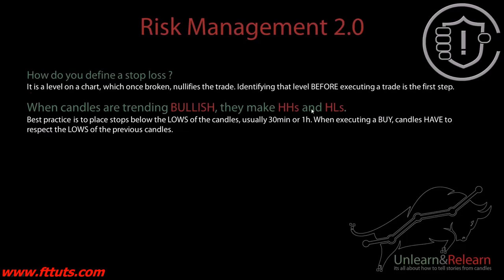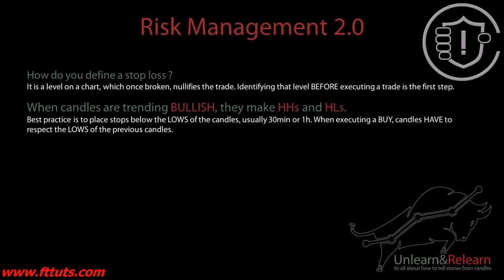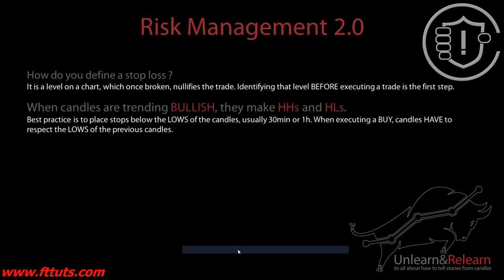For example, when candles are trending bullish, they make higher highs and higher lows. Best practice is to place stops below the lows of the candles — usually on the 30-minute or the one-hour timeframe. When executing a buy, candles have to respect the lows of the previous candles. Whenever you're taking buys, you're always putting stops below the previous candles and making sure candles are respecting those lows.